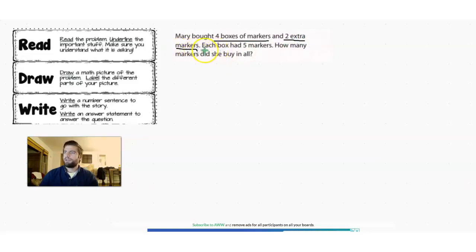Mary bought four boxes of markers and two extra markers. That's going to be important. Each box had five markers in it. How many markers did she buy in all?